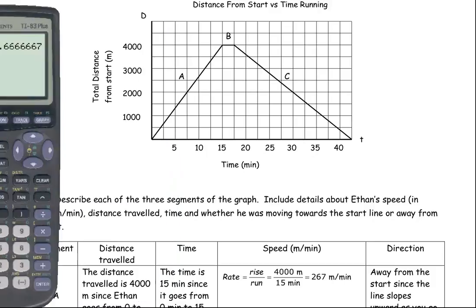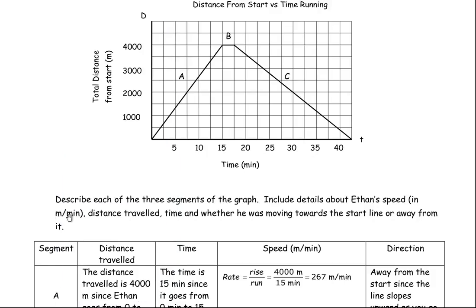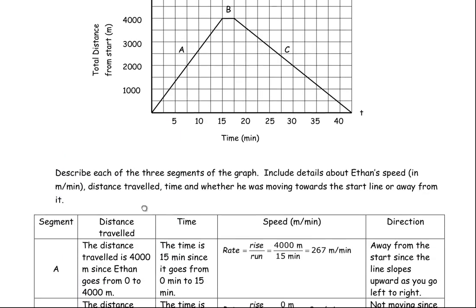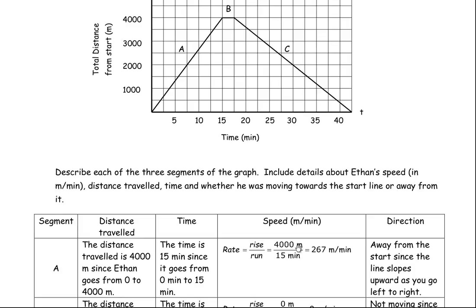And the units would be meters per minute. That's why it says the speed in meters per minute, and it's meters per minute because the 4,000 is in meters, the 15 minutes is in minutes, so it's meters per minute. So he's running 267 meters every minute. And the direction, since it's sloping upwards, he's going further away from the start line, because he started at 0 from the start line. Like at here he's at 1,000, here he's at 2,000. He's getting further away, so he's going away from the start line.